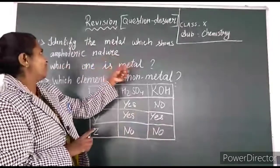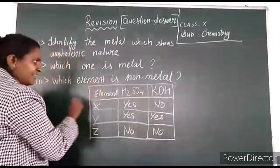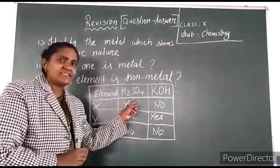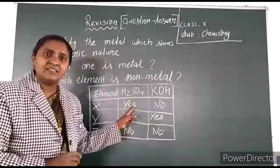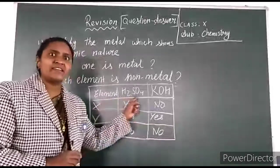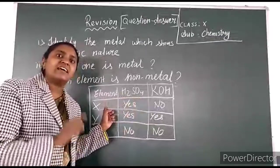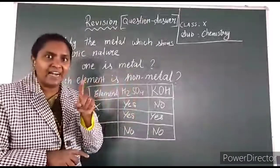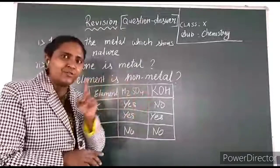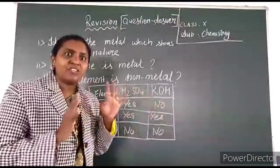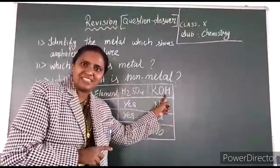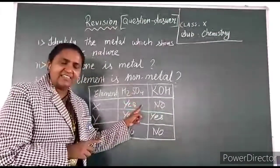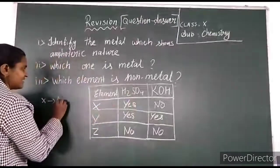The first question is: identify the metal which shows a floating nature. First, run the reactivity. If X reacts with the acid, then what type of element is it? Since X reacts with acid, this element is a metal. You know that all metals react with acid and displace hydrogen gas. Most metals don't react with the base. So X is a metal.